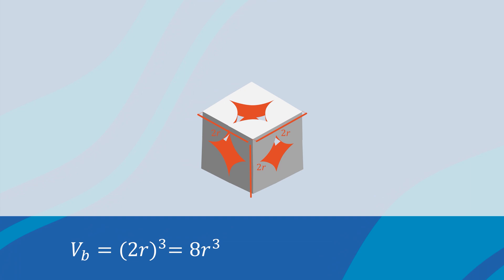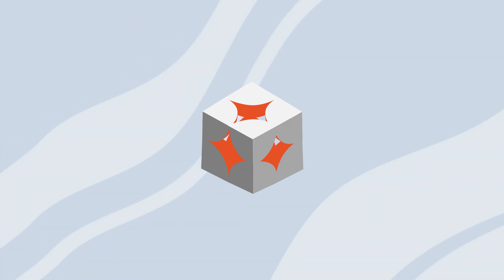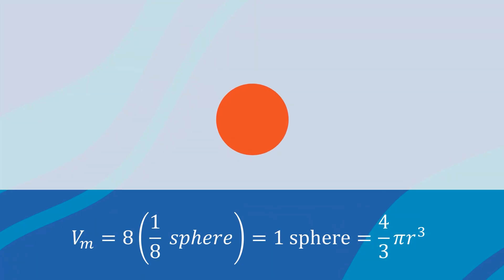The matrix volume in this case is presented by the volume of the spherical portions in this cubic segment. We have 8 portions of 1 eighth of a sphere in this cube. Therefore, the matrix volume is 8 times 1 eighth of a sphere and that will be 1 sphere.